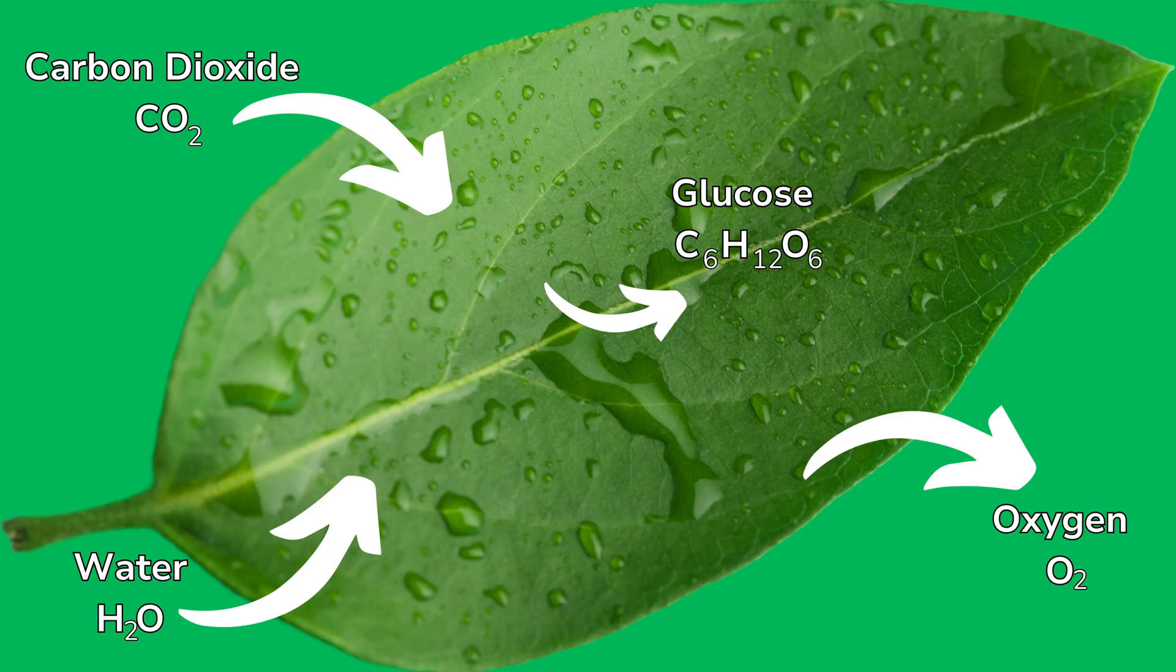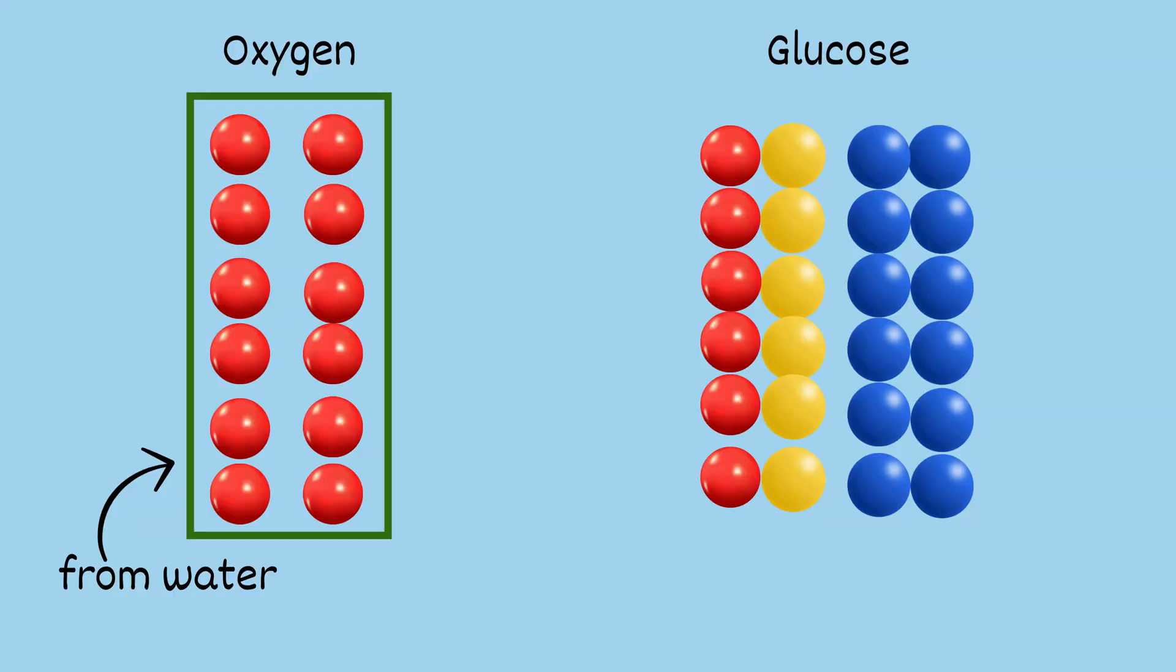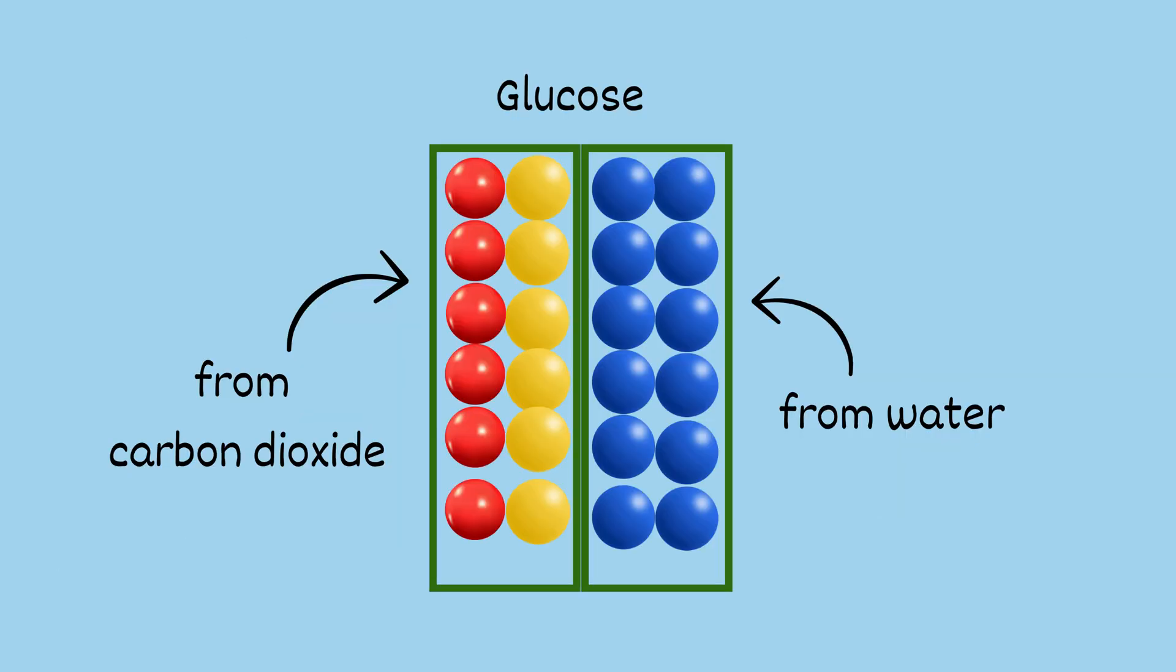If you look at the leaf, the leaf absorbs carbon dioxide through tiny holes called stomata, and water travels up from the roots. The oxygen produced then travels back out of the leaf through those stomata. Now where's that carbon go? Well, that stays inside the leaf locked into the sugar. The oxygen from the water becomes oxygen gas and exits the leaf. Glucose is formed from carbon and oxygen molecules from carbon dioxide, plus the hydrogen molecules from the water.